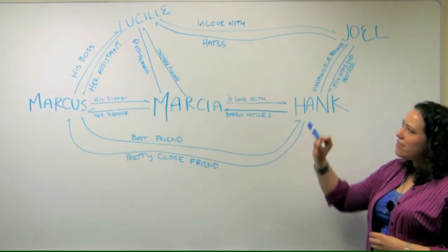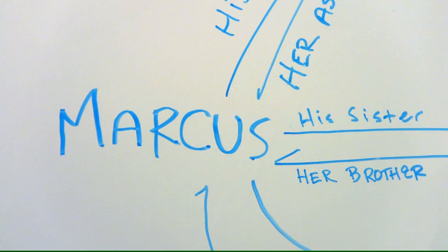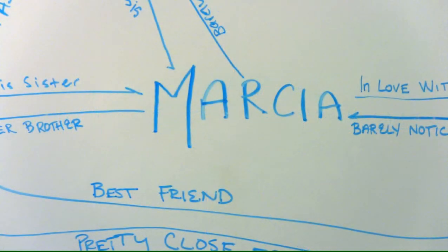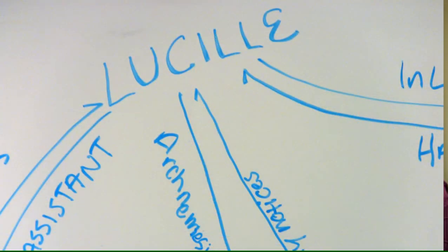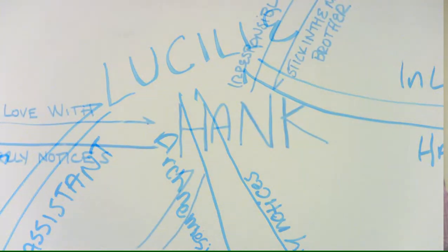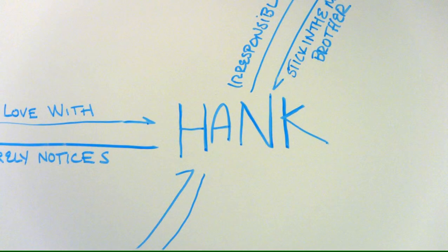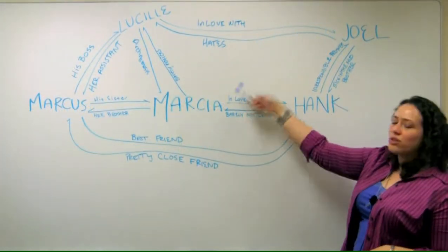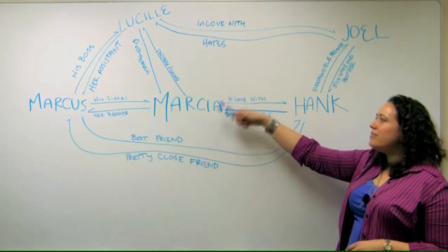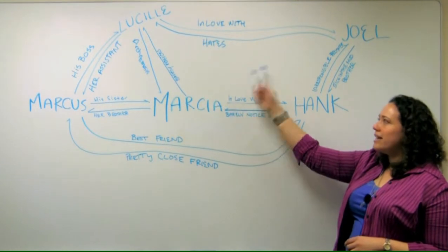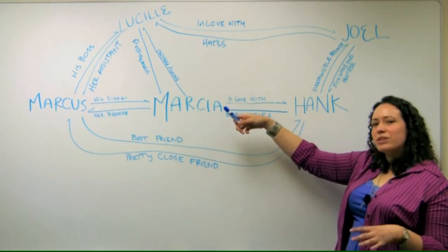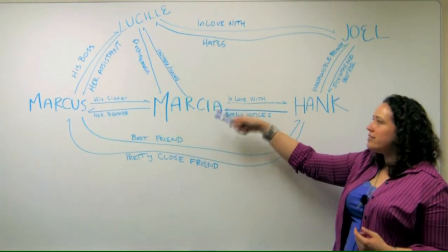Another thing you want to do when you have a character map is try to connect as many of the main characters as possible. You don't want Marsha to be in the middle with relationships to all these other characters and have none of them connected to each other. It's going to be a more interesting film if everyone sort of has a connection to the other person. It's not completely necessary — for example, I left Joel and Marsha apart — but if you can, you want to find a way, even if it doesn't really show up in your screenplay yet, to connect those two.